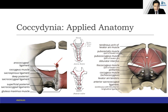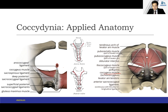The sacrospinous ligament is in very close proximity, and you can see that the gluteus maximus muscle also has an attachment. From the top view, you can see the coccygeus muscle as well as various other fibers which comprise the levator ani.